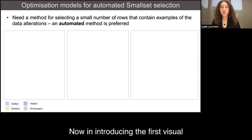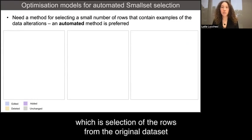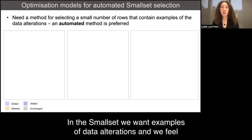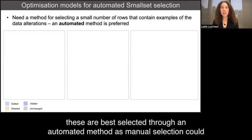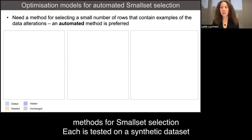Now, in introducing the first visual component, the small set, we skipped over an important aspect, which is selection of the rows from the original dataset. In this small set, we want examples of data alterations, and we feel these are best selected through an automated method, as manual selection could introduce human bias or enable cherry picking. We present three methods for small set selection. Each is tested on a synthetic dataset that has a three-step data pre-processing approach.